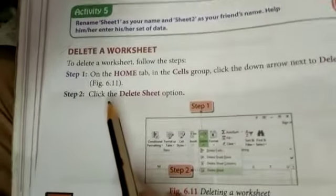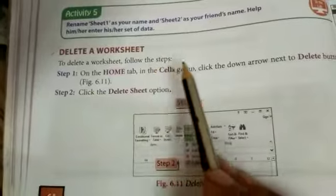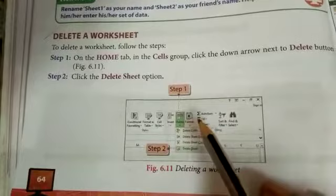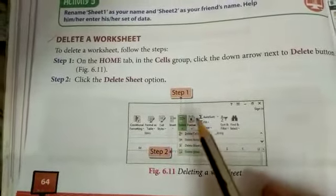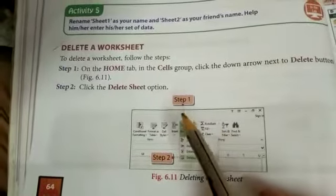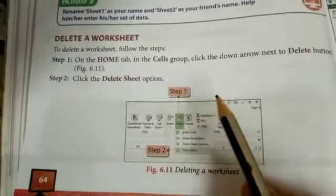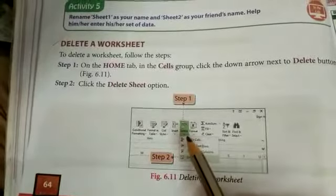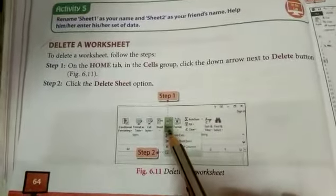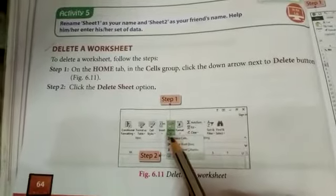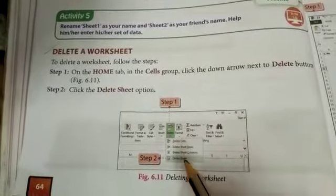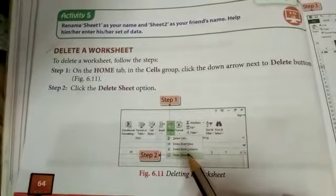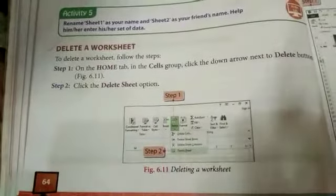Deleting a worksheet. To delete a worksheet, follow the steps: You have to go to the Home tab, Cells group, and then click the drop-down arrow next to the Delete button. Click the Delete Sheet option. The desired sheet will be deleted.